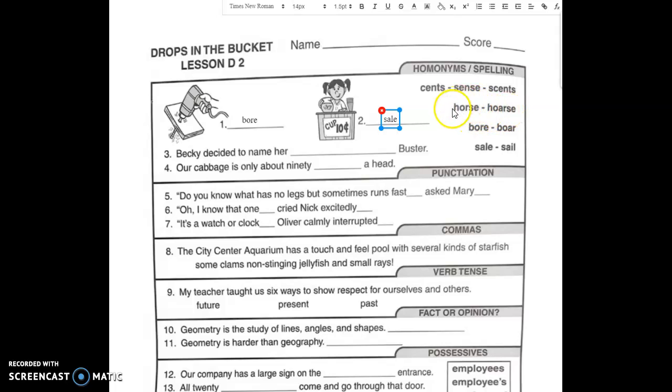The first one is the creature. So here I would add the word horse. The second word means that your voice is all scratchy and dry. Our cabbage is only about 90 cents. C-E-N-T-S. Ahead. That's the word for money.